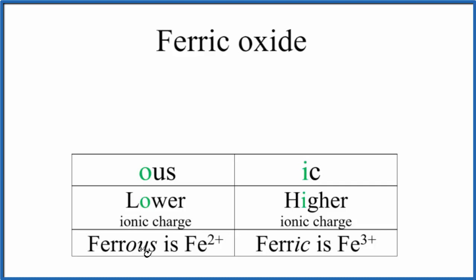With iron, you'd have ferrous oxide, because iron ions are either Fe2+ or Fe3+. The higher charge ends in 'ic', so ferric would be Fe3+. You can remember that 'ous' has 'o' in it like 'lower', and the higher has 'i' like the 'ic' here.